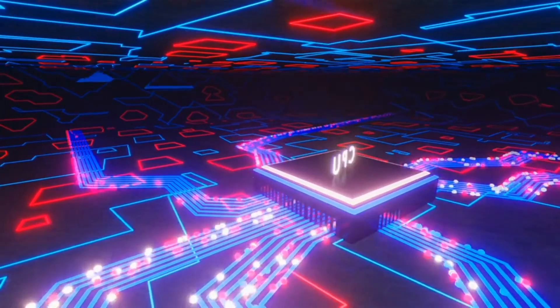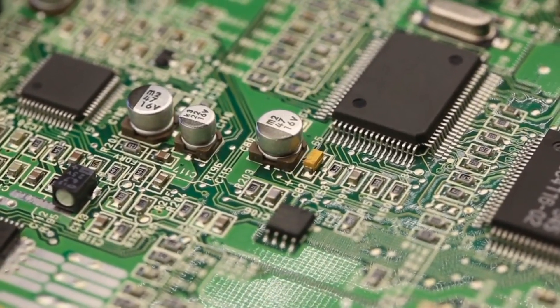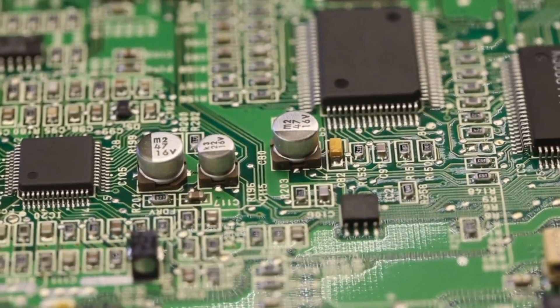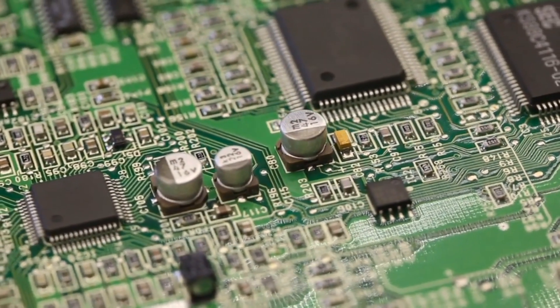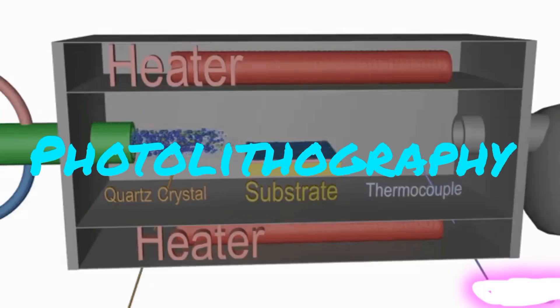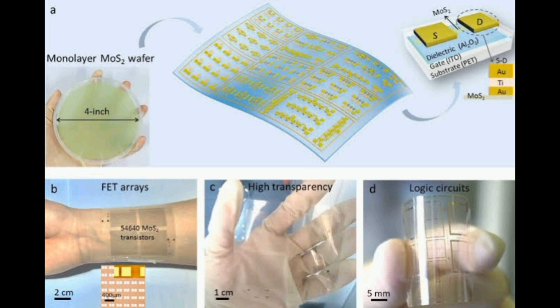CMOS transistors stand guard within the microchips of our devices, orchestrating a symphony of data and electricity, transforming mere silicon into the beating heart of innovation. Through photolithography, CMOS are being transformed to very tiny integrated circuits.